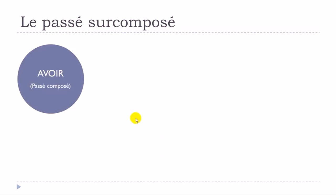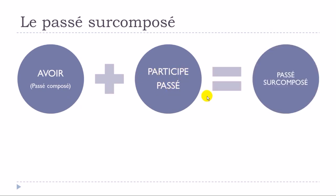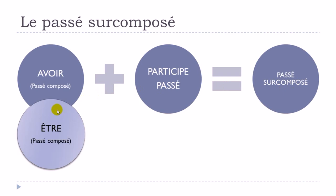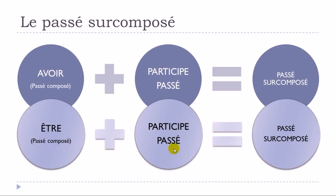To summarize the formation: in most cases you use avoir at the passé composé, then add the participe passé, and you get the passé surcomposé. In some cases, as we saw with aller, you use être — but the concept is exactly the same: être at the passé composé form, then the participe passé, and you get your passé surcomposé.